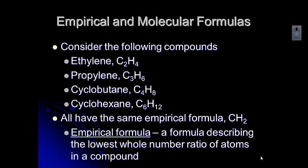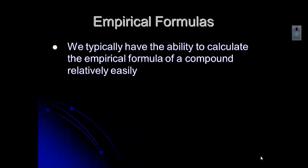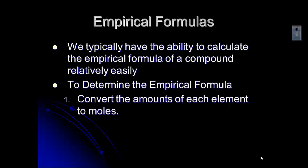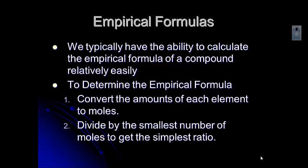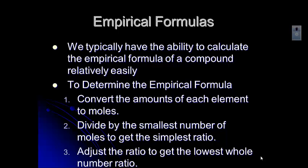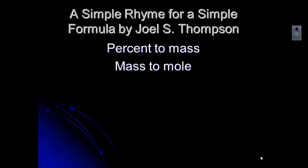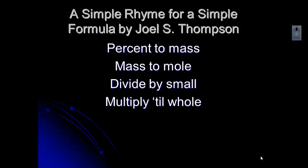The molecular formula is a little bit more of a challenge. So let's take a look at how we can figure out the empirical formula. What we have to do is take the amounts of each of the elements in the compound and convert those amounts to moles, then divide by the smallest number of moles to get to the simplest ratio. We may end up with a fraction or decimal, so we'll adjust the ratio to get the lowest whole number ratio. It's called a simple rhyme for a simple formula: percent to mass, mass to mole, divide by small, multiply till whole.